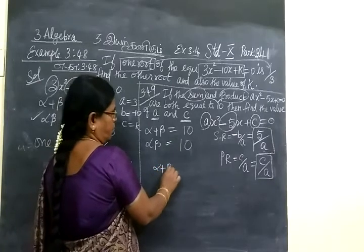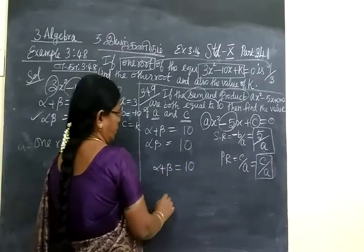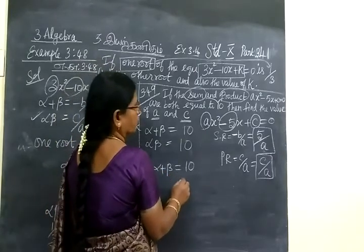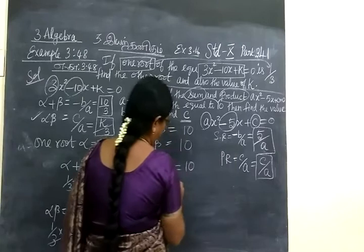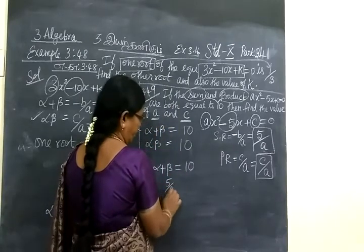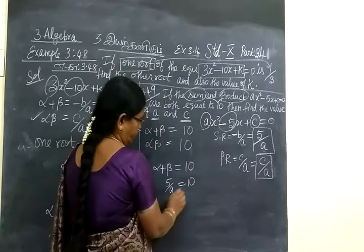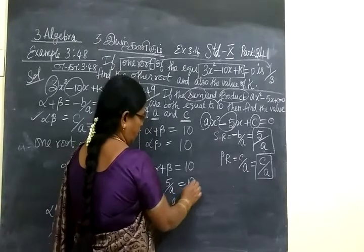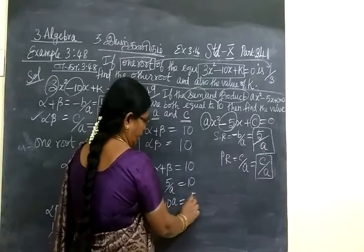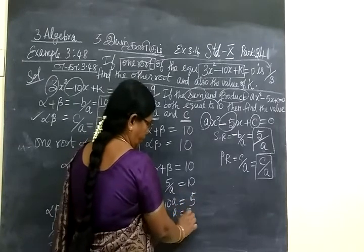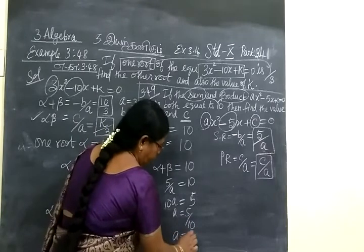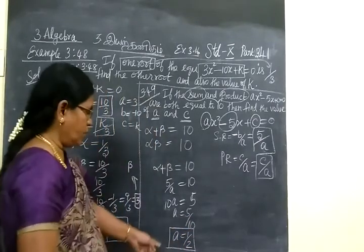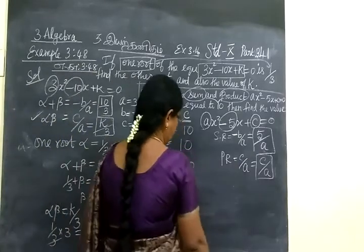Now substituting: alpha plus beta equals 10. So 5 by a equals 10, which means a equals 10 by 5, or 10a equals 5, then a equals 5 by 10. So a equals 1/2. You now know the value of a equals 1/2.